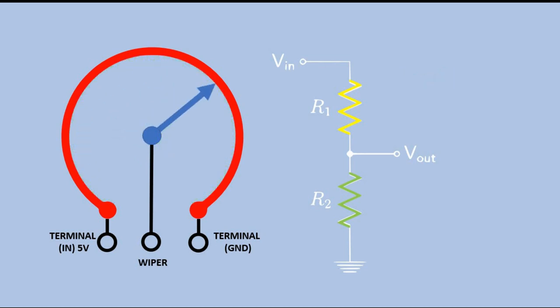Now let's turn the shaft all the way to the right. Now R2 resistance is 0 ohms and we get output voltage of 0 volts. So turning the shaft we get the output voltage ranging from 0 to 5 volts.